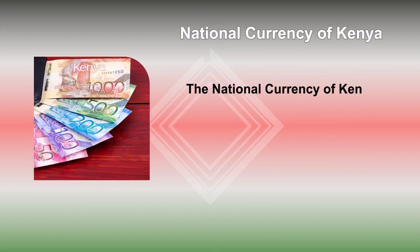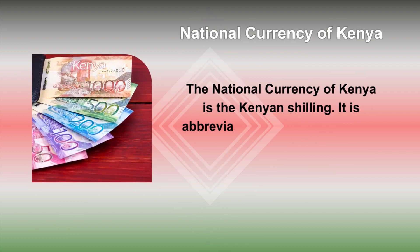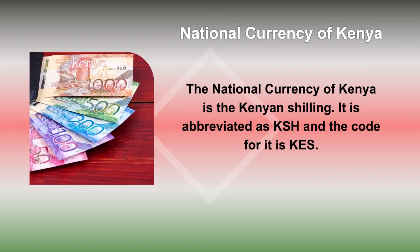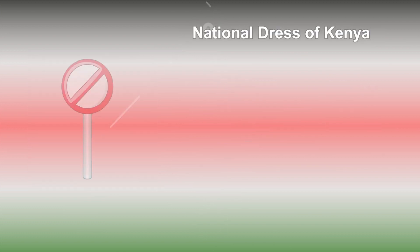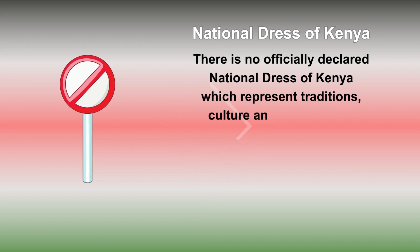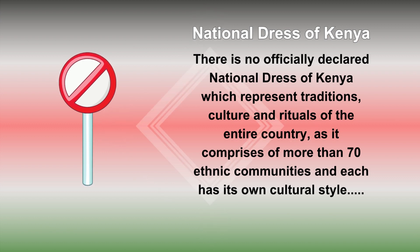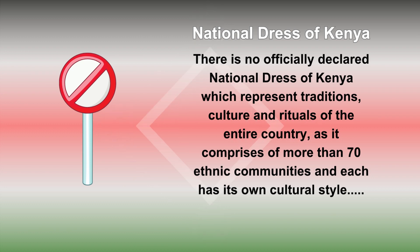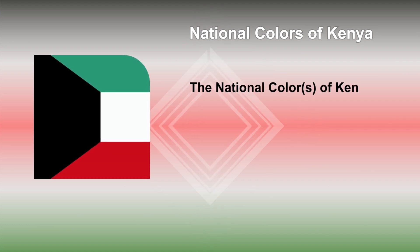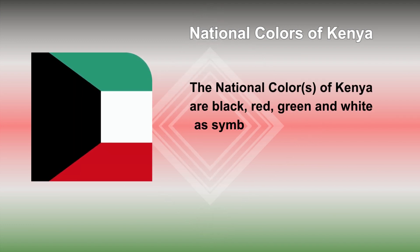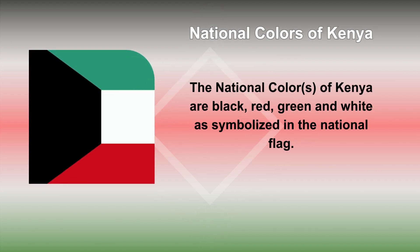The national currency of Kenya is the Kenyan shilling, abbreviated as KSH with the code KES. There is no officially declared national dress of Kenya which represents the traditions, culture, and rituals of the entire country, as it comprises more than 70 ethnic communities, each with its own cultural style. Modern citizens, however, follow the modern dress code of the West. The national colors of Kenya are black, red, green, and white, as symbolized in the national flag.